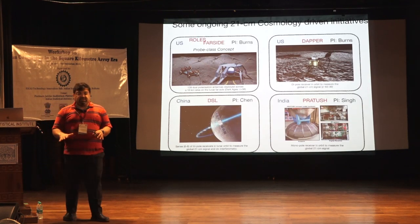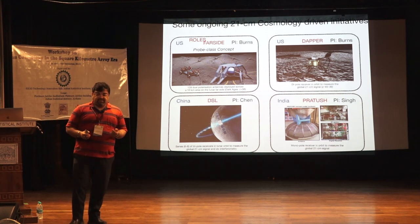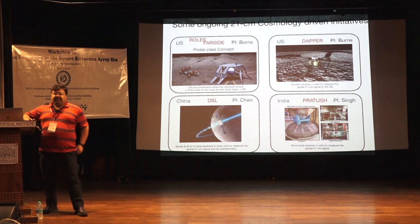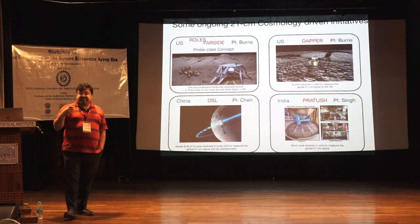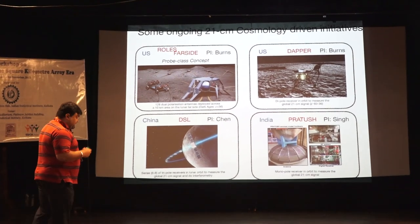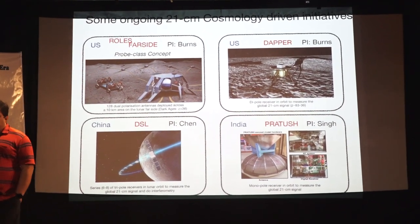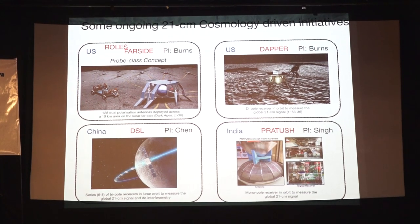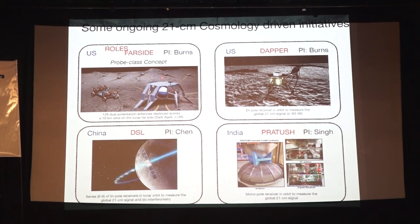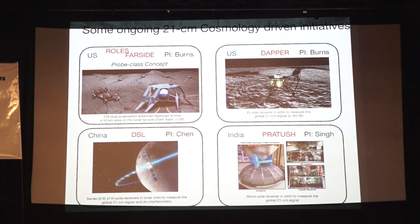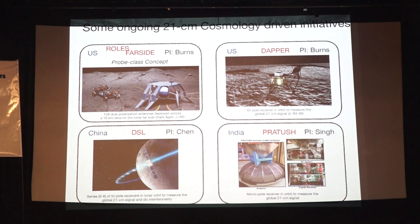From the ground you cannot avoid RFI and you cannot avoid the ionosphere. One ambitious solution: if you have sufficient funding, you go to space above the ionosphere, shielded from RFI. A good place is the far side of the Moon. There are studies from the University of Colorado under NASA for landing on the far side and deploying antennas there. Similarly, ESA and the Netherlands have a low-frequency astronomical observatory on the far side of the Moon in the planning stage. The DARE concept is another such initiative.